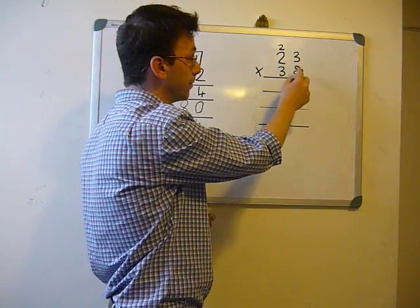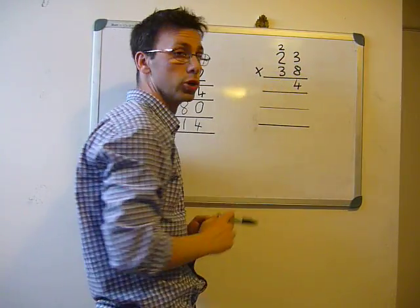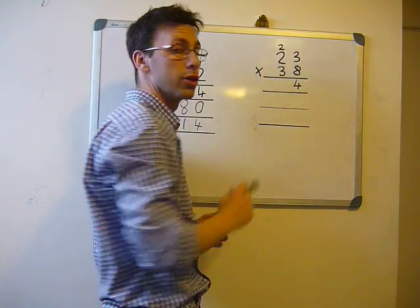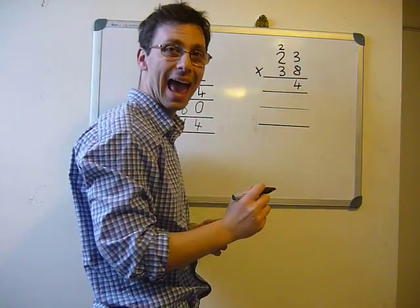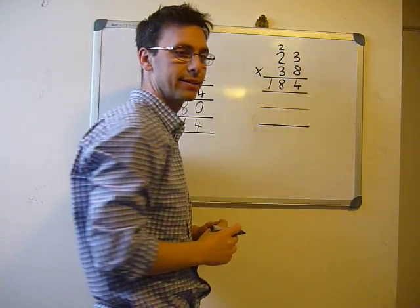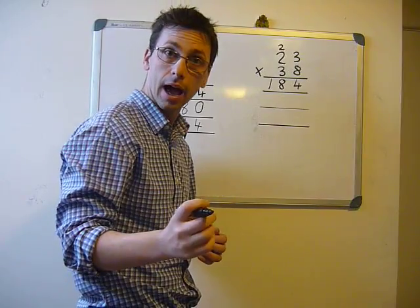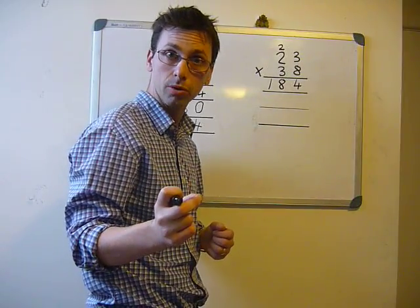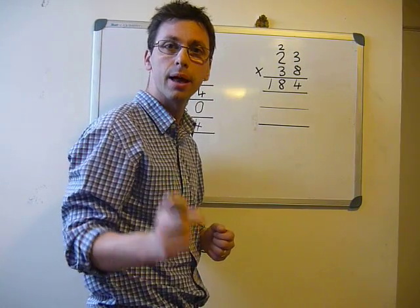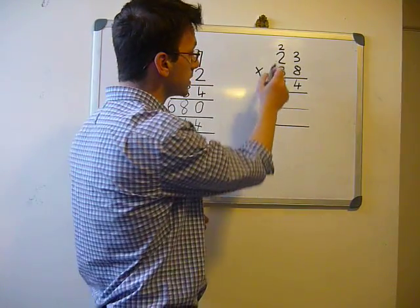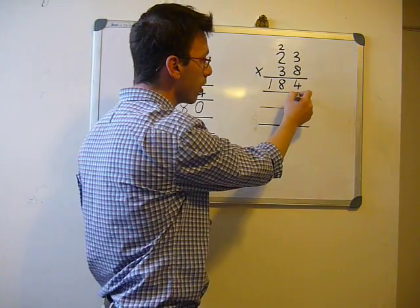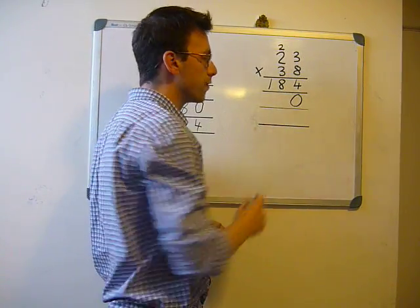Same number again, 8 times 2 equals 16 plus the 2 equals 18. Put the 1 and the 8 down. Now carrying the 0 is very important. The 0 represents place value because these numbers are in the tens column, so we put the 0 underneath the first number.